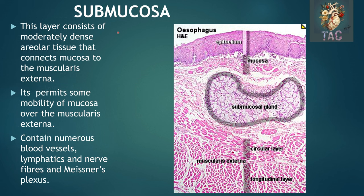The second layer of the GI tract is the submucosa. This consists of moderately dense irregular connective tissue that connects mucosa to the muscularis externa, permitting some mobility of mucosa over the muscularis externa. It contains numerous blood vessels, lymphatics, nerve fibers, and Meissner's plexus. Also, tubulo-alveolar type mucus-secreting glands are present in the lower part of the esophagus as well as in the submucosa of the duodenum. These are two exceptions to the other parts of the GI tract where only connective tissue elements are present in the submucosa.